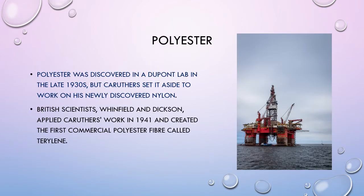One of the other main synthetic fibres is polyester. Polyester was discovered in a DuPont lab in the late 1930s, but Carruthers set it aside to work on his newly discovered nylon. British scientists Winfield and Dixon then applied Carruthers' work in 1941 and created the first commercial polyester fibre, called Terylene.